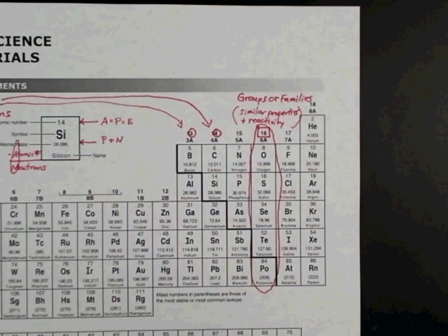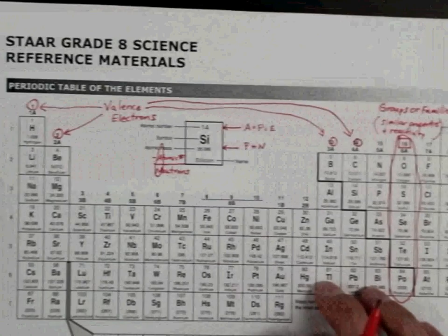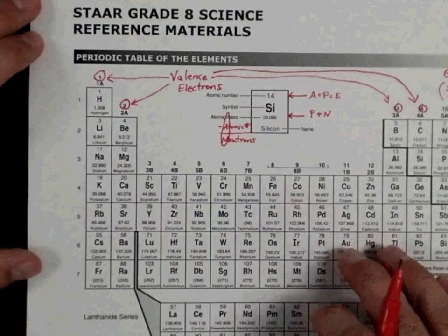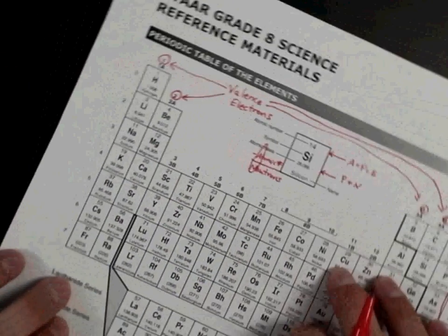And so now we're going to move over to the periods. These are the rows, the horizontal rows going across the periodic table, and they tell us a couple of different things.